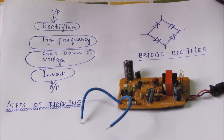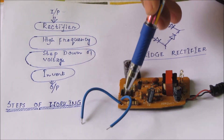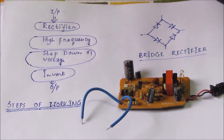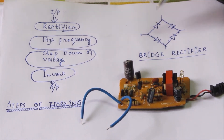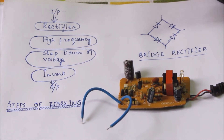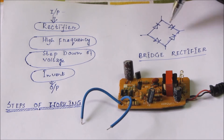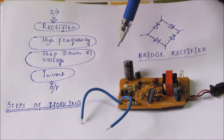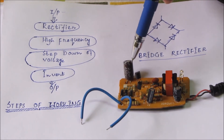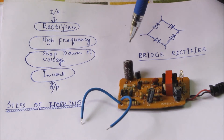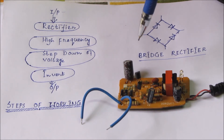After the step-down, a sub-inversion process takes place and finally we get the output. Through these two blue wires, the input voltage of 230 volt AC comes in. These four diodes form a bridge rectifier — through this bridge rectifier, the AC signal is converted into a DC signal.